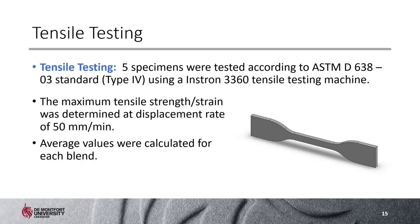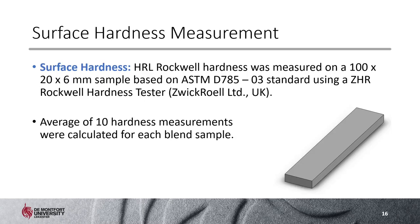For tensile testing, five specimens with type 4 geometry specified in ASTM D638-03 standard were fabricated. After fabrication, specimens were tested using an Instron 3360 tensile testing machine at a constant displacement rate of 50 mm/min until failure. Before testing, the thickness and width of each specimen was measured at the middle and within five millimeters of the two ends of the gauge length. For each blend, the average values of maximum tensile strength, maximum tensile strain, and tensile strength and strain at failure were determined.